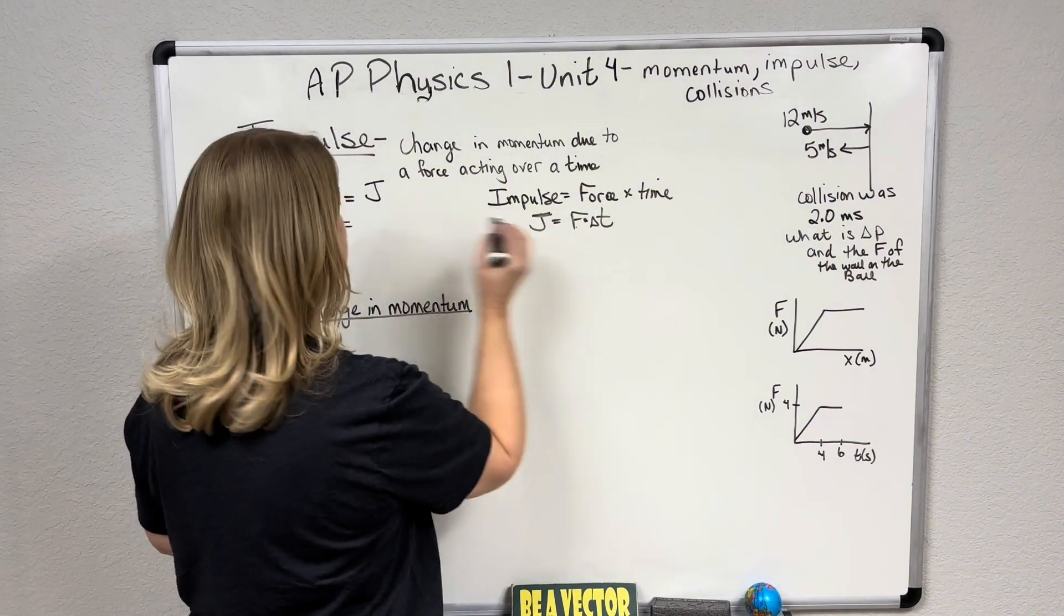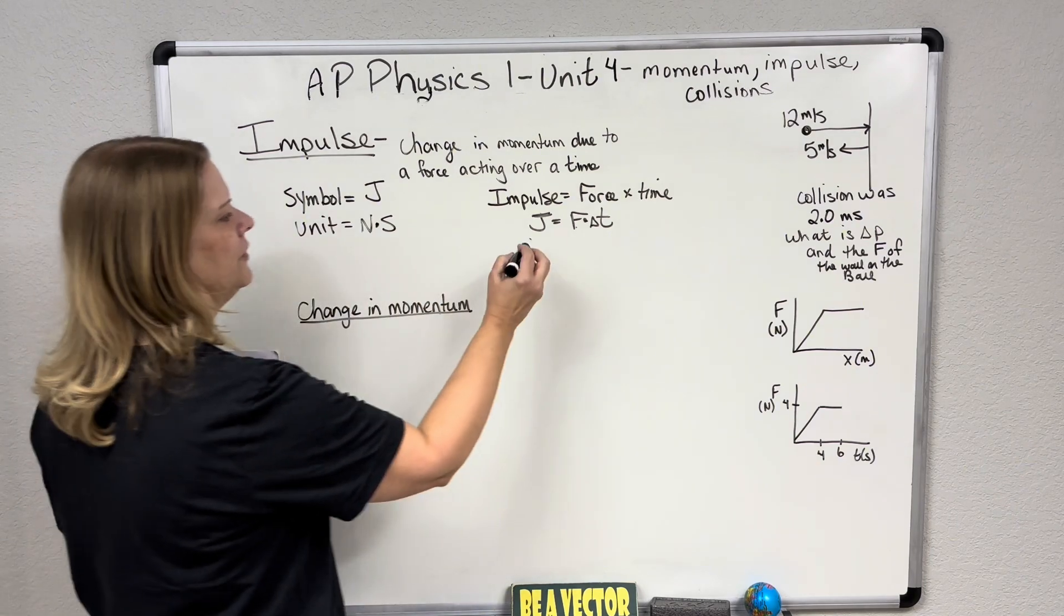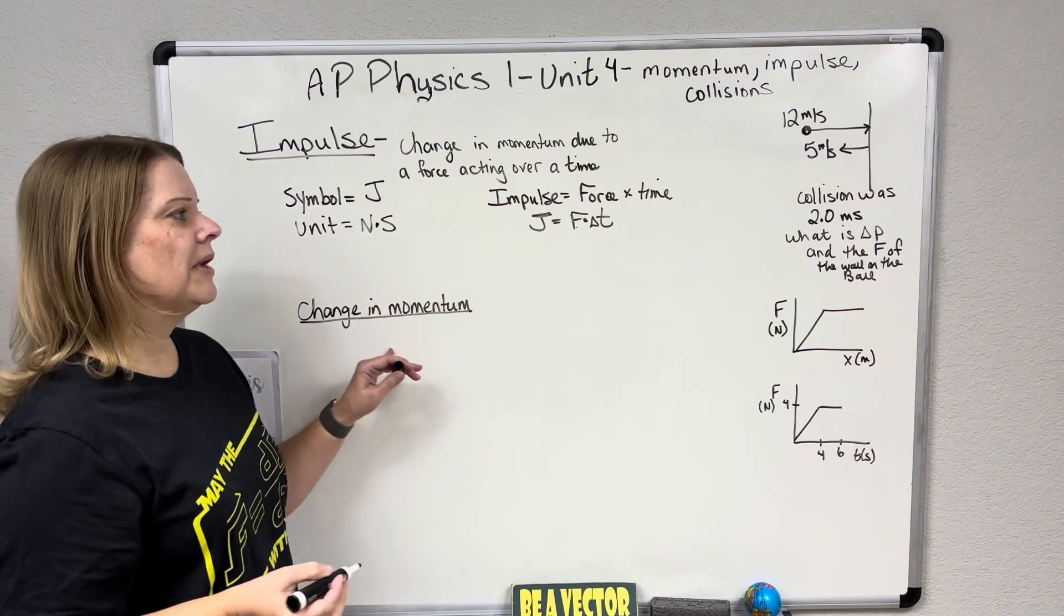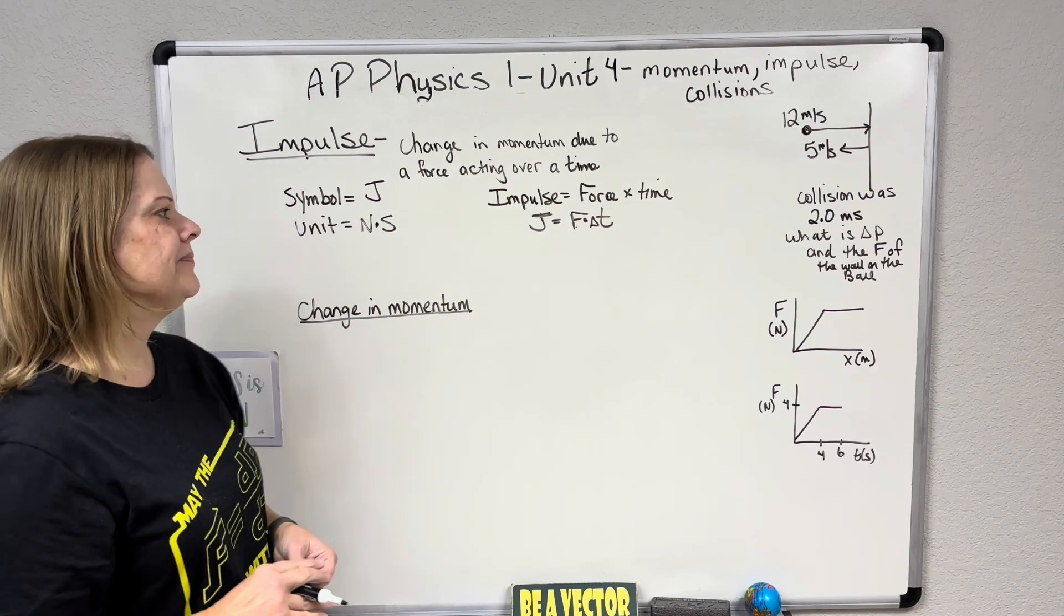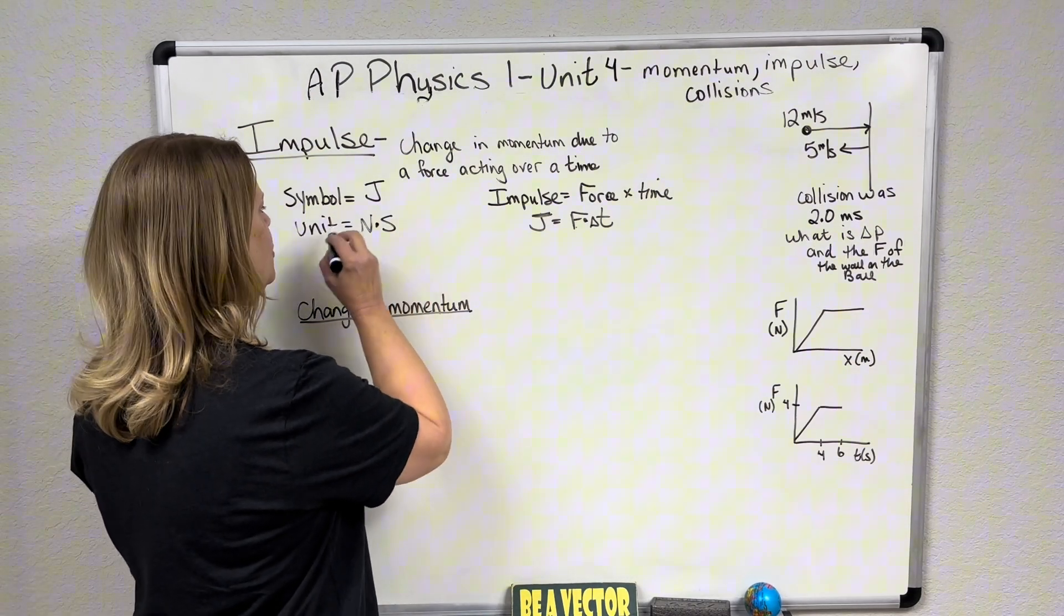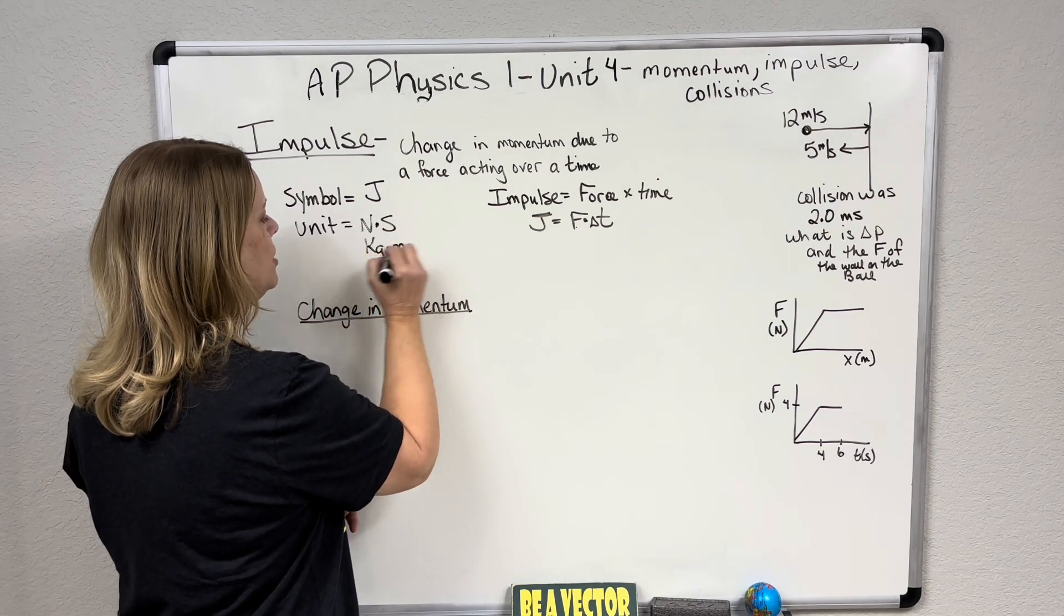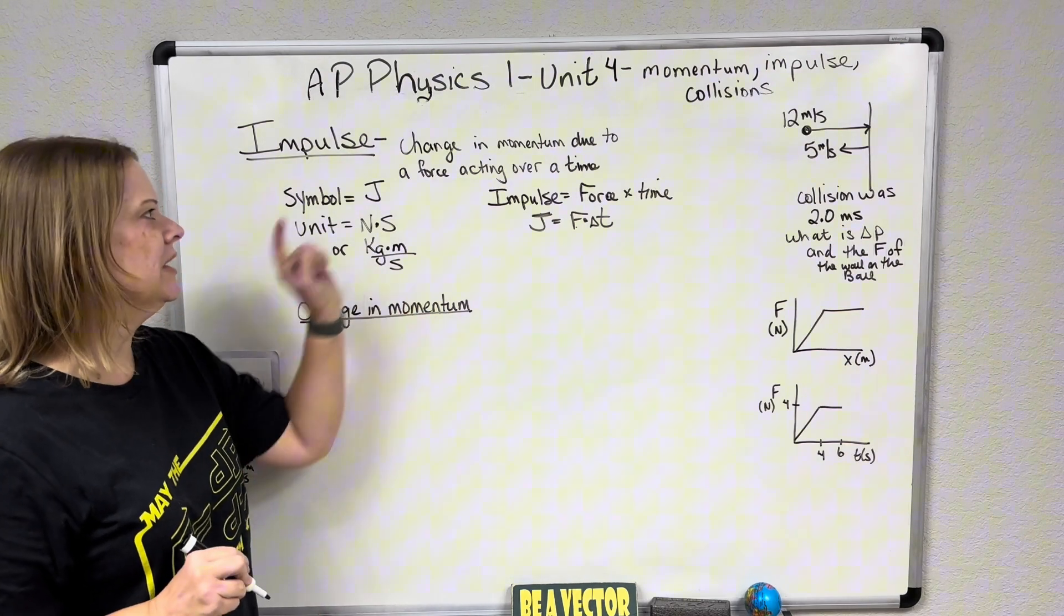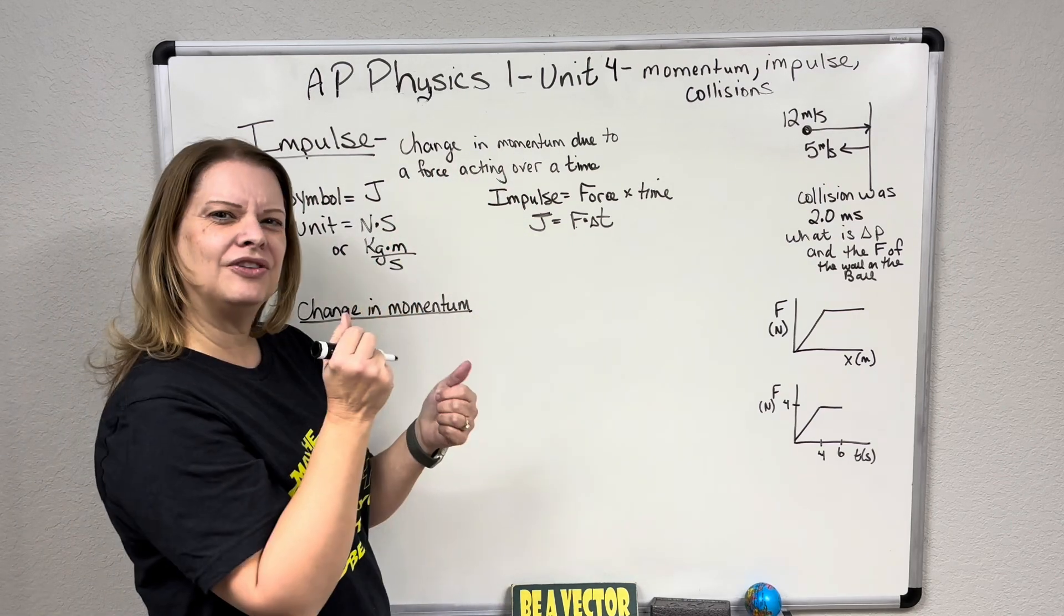So force is in newtons, and time is in seconds. So impulse is in newton times a second, and that is the unit. Now let's talk about why we say it's a change in momentum due to a force acting over a time. It's a change in momentum. Now here's another thing actually with units.